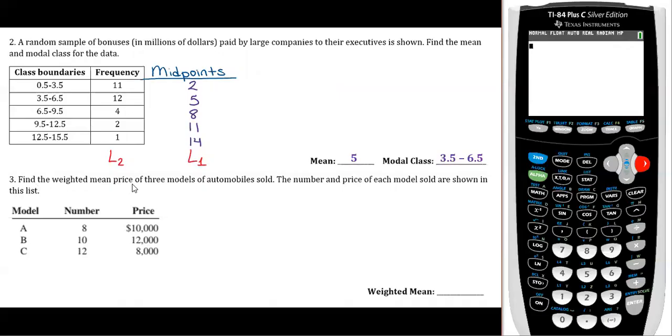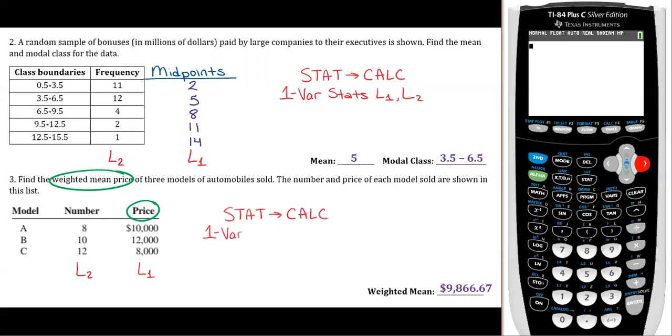Now on this one, it wants you to find the weighted mean price of the three models of automobiles sold. Now students always ask, how do you know which one is the weights? Is it the number or is it the price? Well, look what you're finding the weighted mean for. It's the weighted mean price. Whatever you're actually finding the mean of, that one is your L1. That is not the weights. The weights are the other variable basically. So if we're finding the weighted mean price, that means we're going to put the price in L1 and then the weights in L2. And then you'll do stat, calc, one-var stats, L1, L2. Same thing on both of these. And then you'll get your weighted mean of $9,866.67.